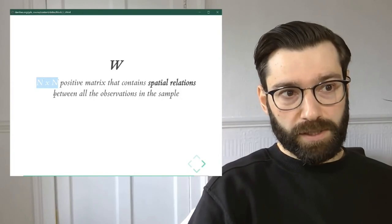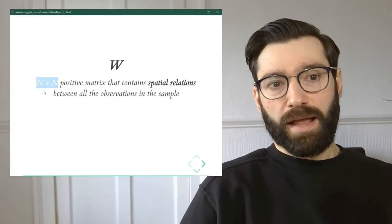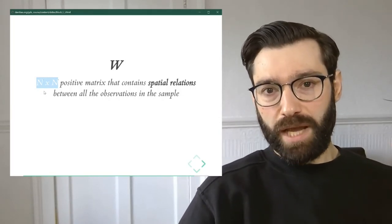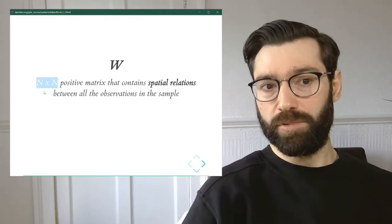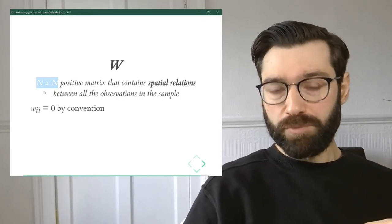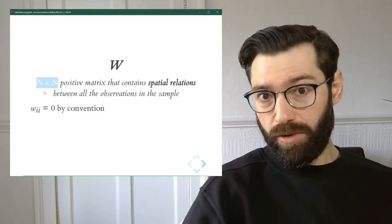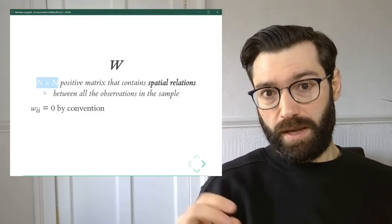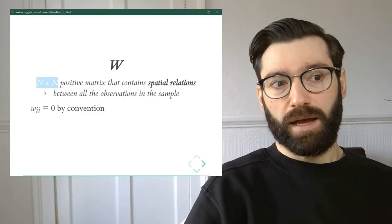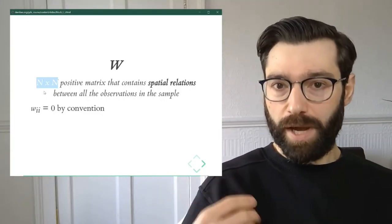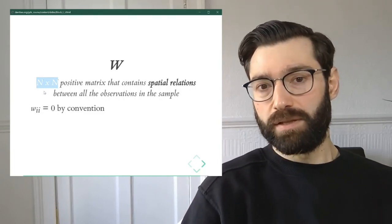The key thing is that a spatial weights matrix contains the relationship between every observation in a sample with every other observation in a sample. And by convention, because we're recording in these matrices only the relationship between one observation and another one, the diagonal of the matrix is assigned to zero by convention. So by convention, we're saying an observation is not the neighbor of itself.